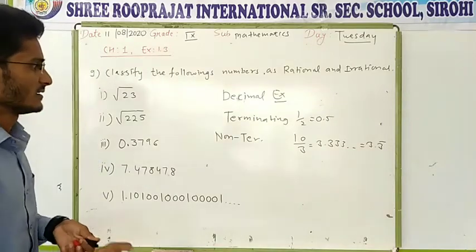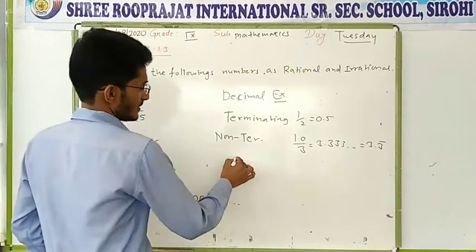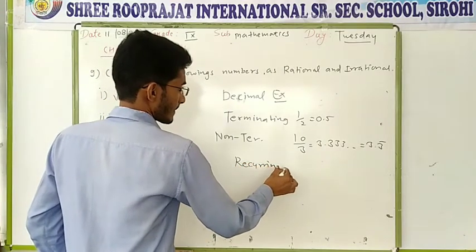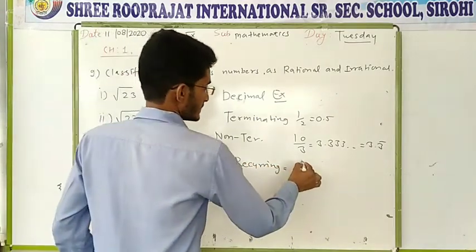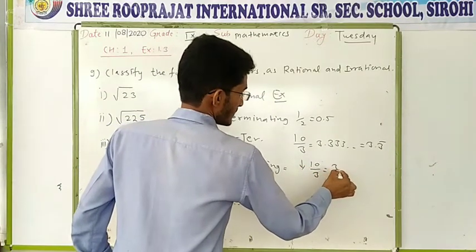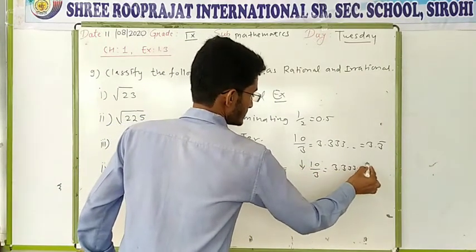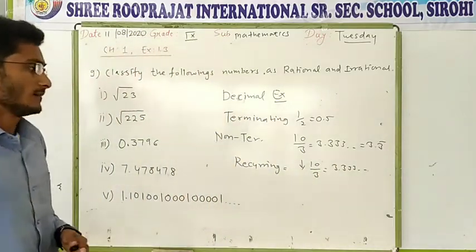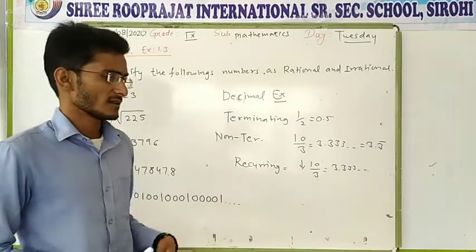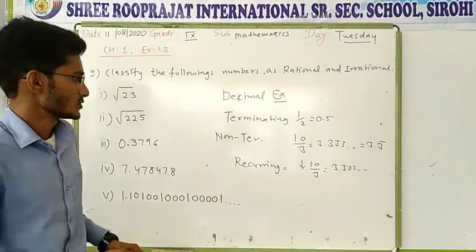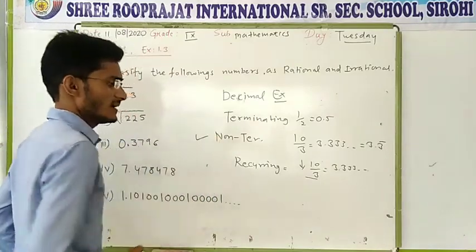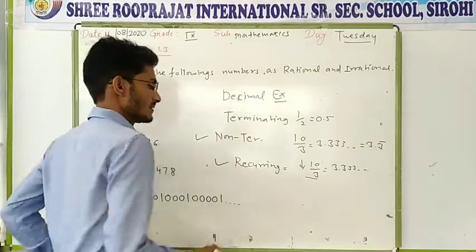Next one is recurring. Suppose I take the same example: 10 divided by 3, you will get 3 decimal 3, 3 and continuing. When the number repeats itself, that is called recurring. Recurring means repeat. So 10 by 3 is non-terminating and recurring.